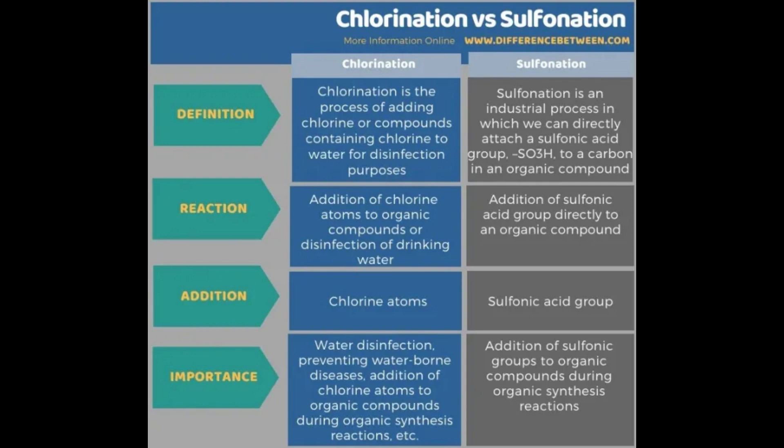The process of chlorination typically involves the introduction of chlorine gas, sodium hypochlorite (liquid bleach), or calcium hypochlorite (a solid compound) into the water supply. These chlorine compounds release hypochlorous acid (HOCl) and hypochlorite ions (OCl⁻) when they come into contact with water.